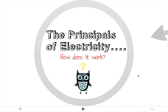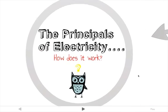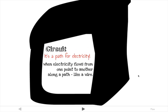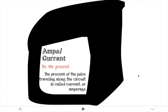How do electrical systems work? Well, first of all, you need a circuit. A circuit is a path for the electricity — electricity flows from one point to another along a path such as a wire. Amps, or current, are the actual process of the electricity flowing along that circuit, and it's measured with the letter A.